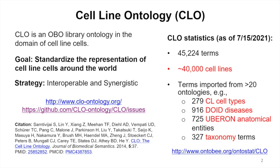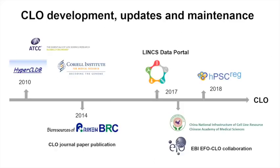So far we have over 40,000 cell lines covering all kinds of things. For each cell line, we have a cell type, disease, and other properties. Initially, we used ATCC, HyperCLDB, and the Coriell Institute as sources. Later we added Japan resources, and we have been working with many parties like EBI, OBI, and Japan.